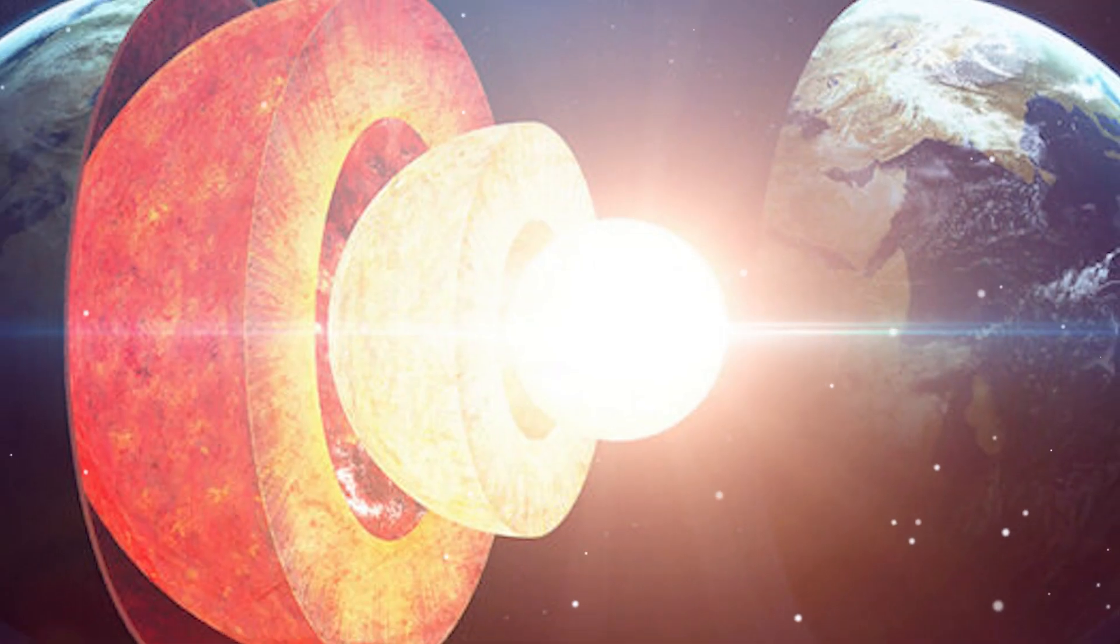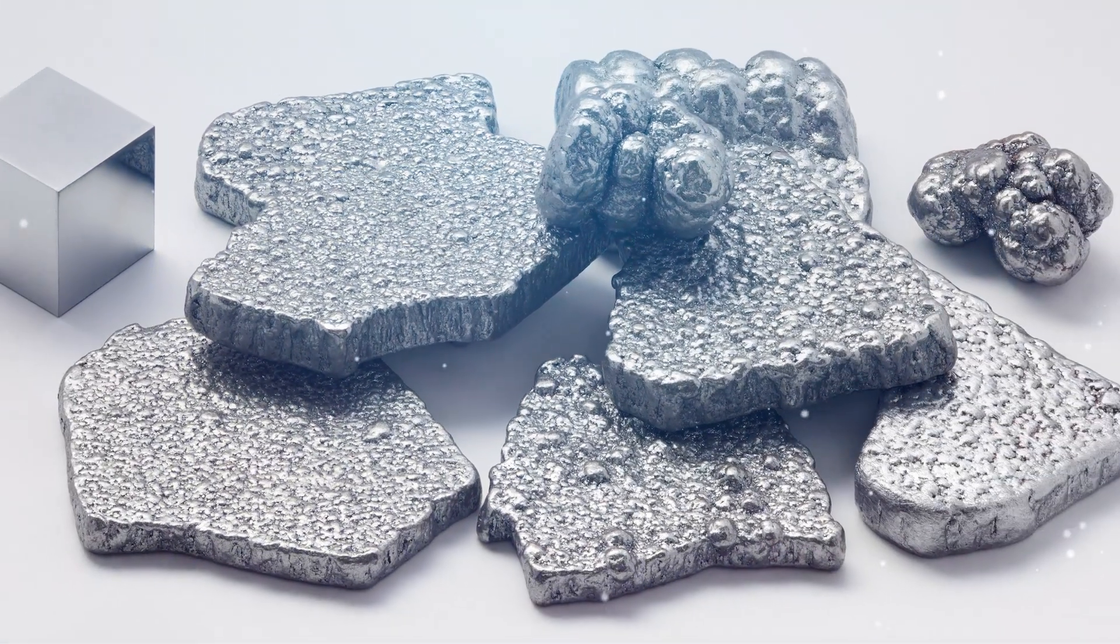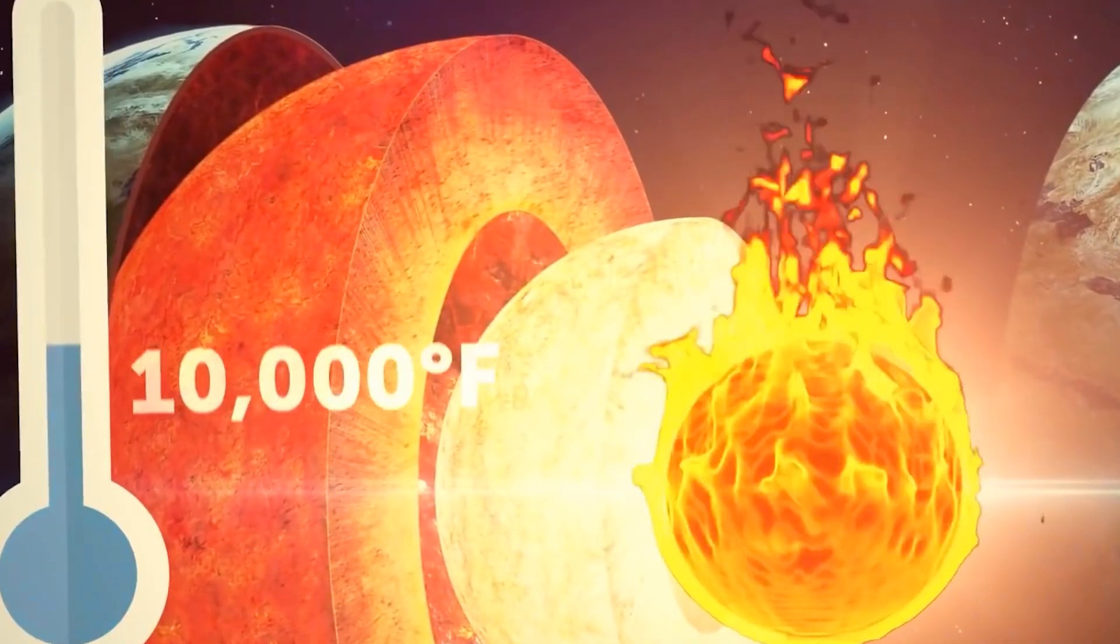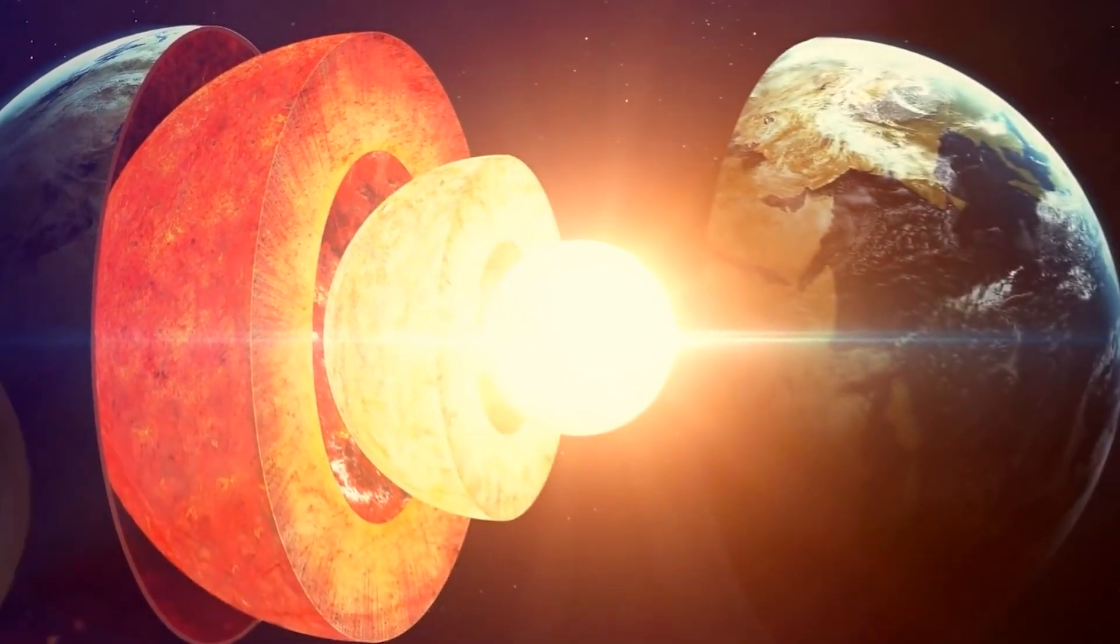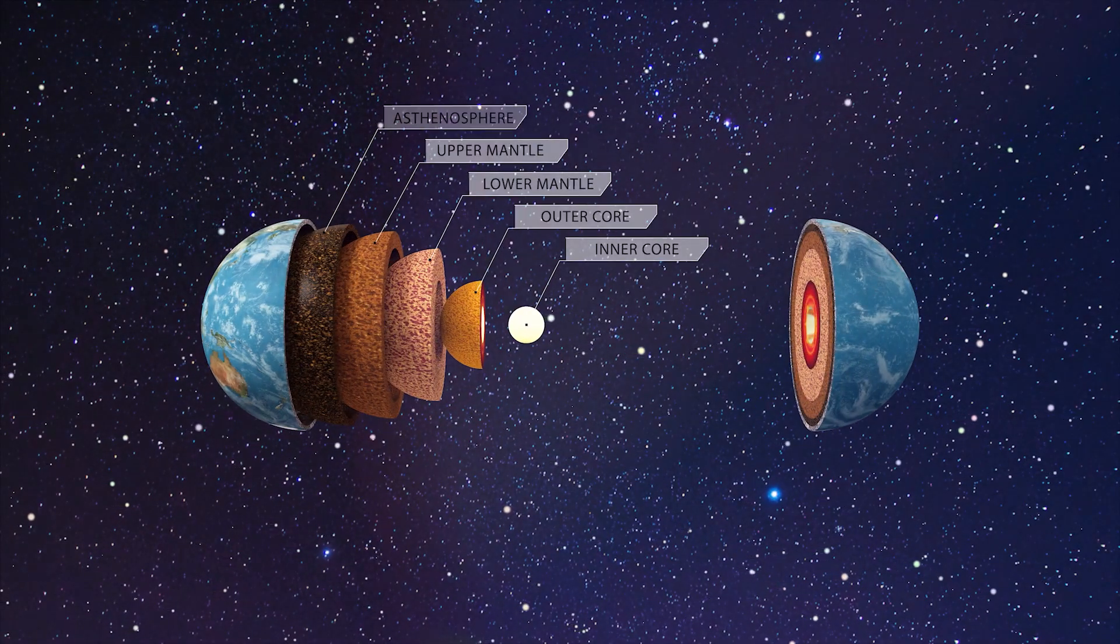Deeper still, we reach the inner core. This is like the Earth's solid core, composed mainly of iron and nickel. Despite being incredibly hot—we're talking about temperatures hotter than the surface of the sun—the immense pressure at this depth keeps things solid. Well, this brings us to the end of this video.